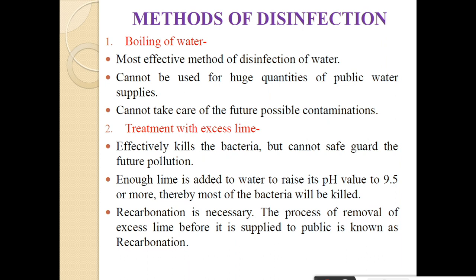Next method is treatment with excess lime. This treatment with excess lime method effectively kills the bacteria, but this cannot safeguard against future pollution of the water. In this case, enough lime is added to the water to increase its pH value to 9.5 or more, and thereby most of the bacteria will be killed. Due to the increase in pH value, recarbonation is necessary. The process of removal of excess lime before it is supplied to the public is known as recarbonation. For drinking purpose, the pH should be between 6.5 to 8, so we have to remove this excess lime and reduce the pH range to 6.5 to 8 to make the water potable. For recarbonation, we add carbon dioxide into it.